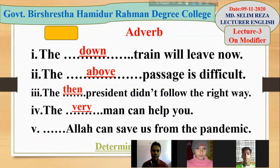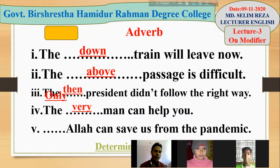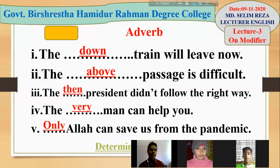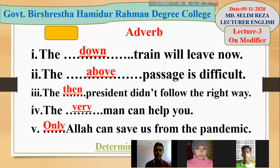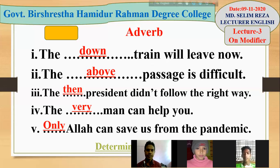Last example of adverb: '___ Allah can save us from the pandemic.' The adverb here is 'only' — 'only Allah.' 'Only' is an adverb, so it's another example of adverb used as premodifier. In such a way we may use adverb as premodifier. Is there a problem? No. So now we go to the next slide.